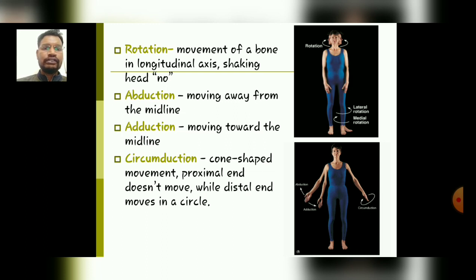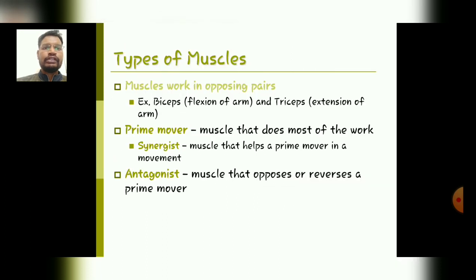Last but not least is circumduction, which involves a combination of all types of movement. It is a cone-shaped movement where the proximal end does not move while the distal end moves in a circular shape. The next topic is the types of muscles. Muscles work in opposing pairs — for example, the biceps helps in flexion of the arm and the triceps helps in extension of the arm. There are four types of muscle.